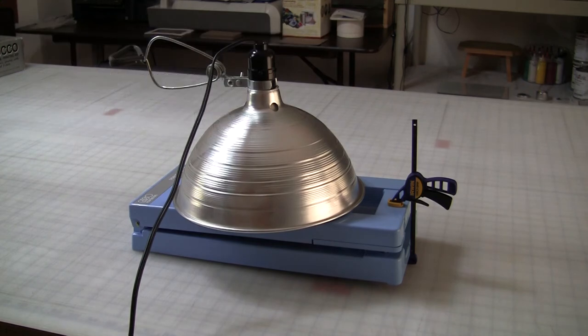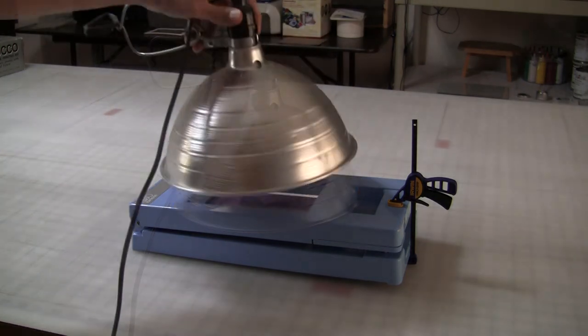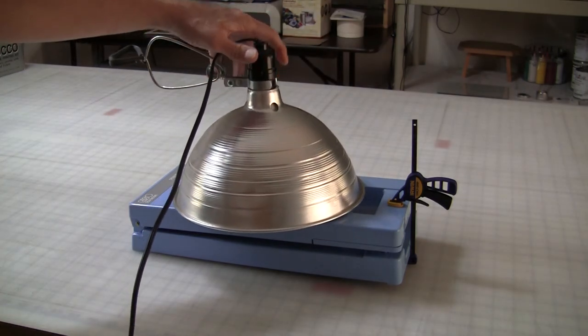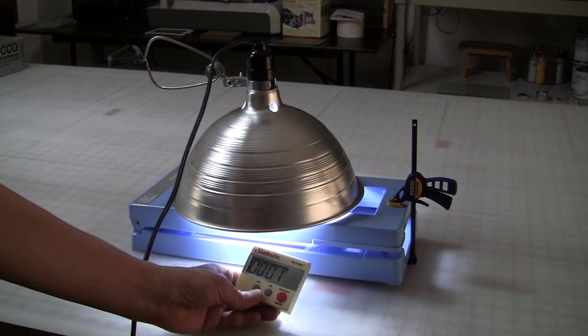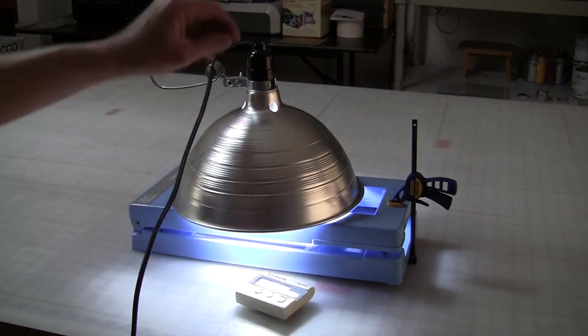You don't want any shadows or hot spots. Center the reflector over the window. Turn on the light and start the timer. Light off as soon as the timer ends.